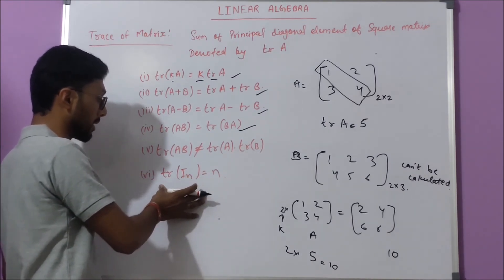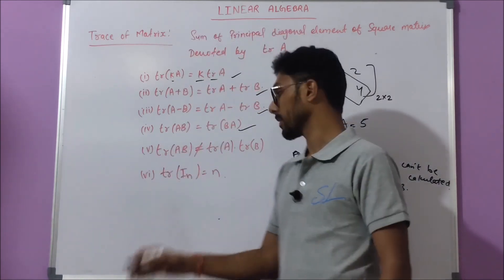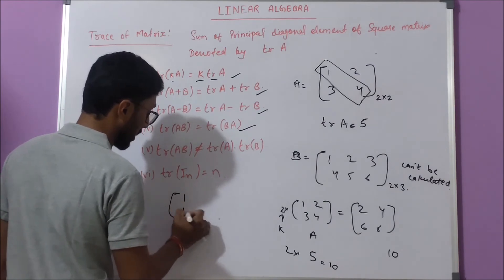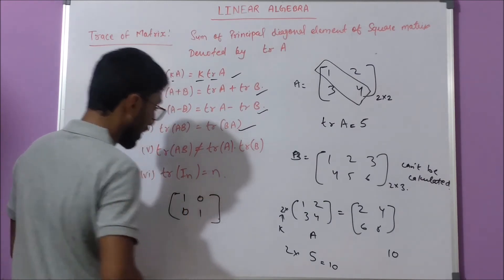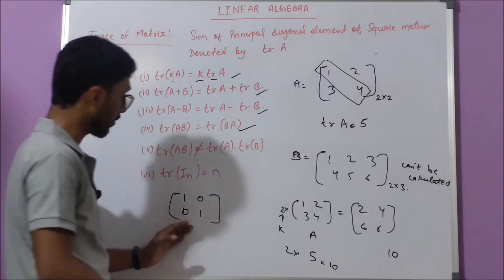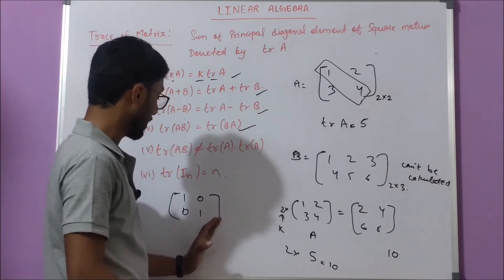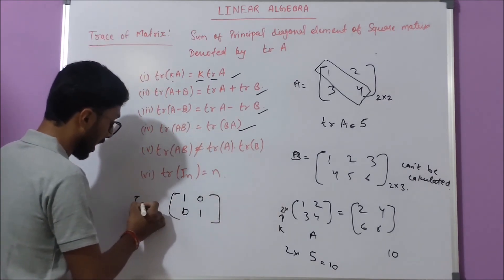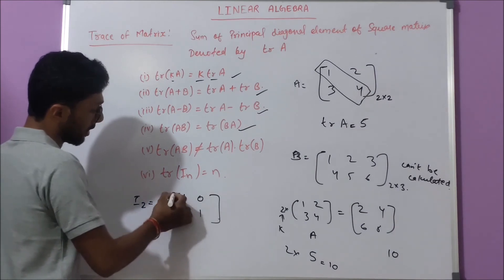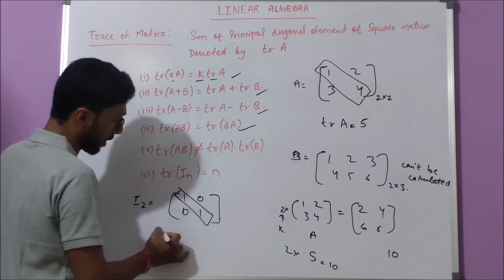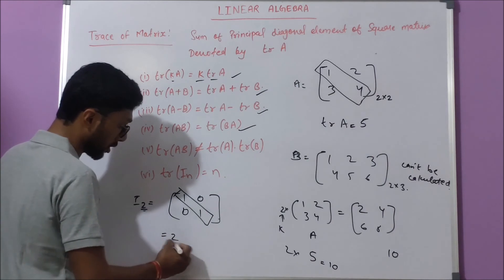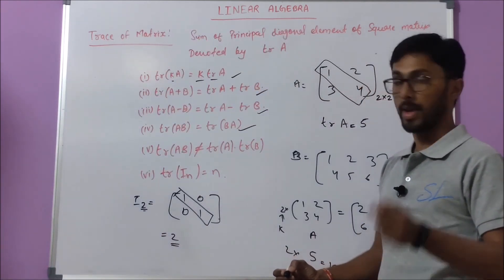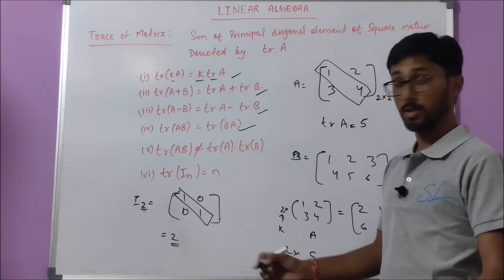The last property is that tr(I_n) = n. For an identity matrix, each principal diagonal element equals 1. For a 2×2 identity matrix, the sum of principal diagonal elements is 2, so tr(I_n) = n. That's how we find the trace of a matrix — a very easy concept. That's it for this video.